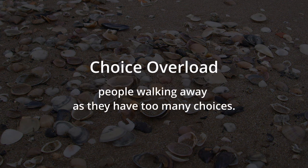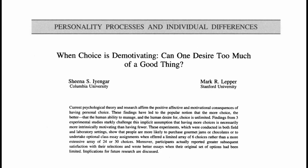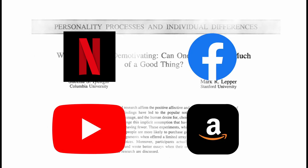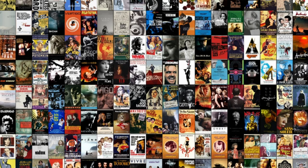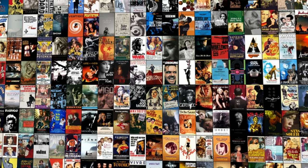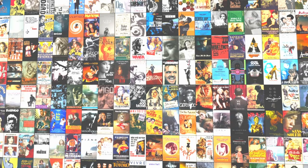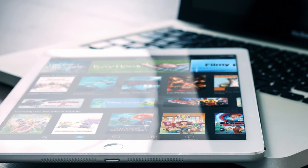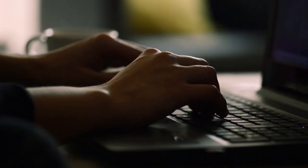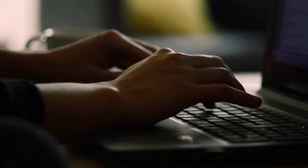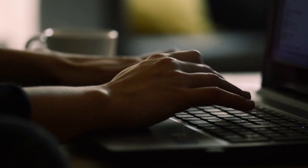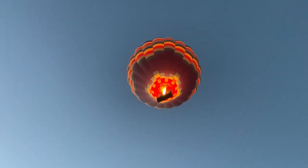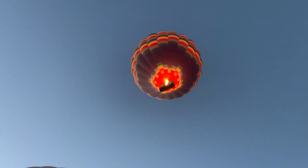People walk away because they have too many choices. Choice overload is a fundamental problem that Netflix and other recommender systems solve: how to transform a catalogue of billions of items into a small list of items that a customer in front of them will like. Imagine if you had to write a programme to do exactly that — you might feel like you've been asked to send a hot air balloon to space.